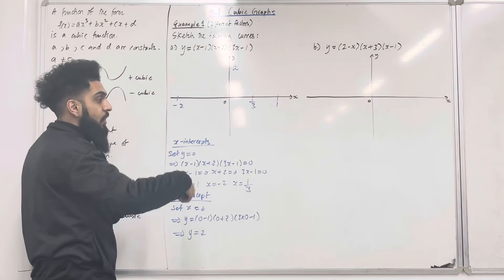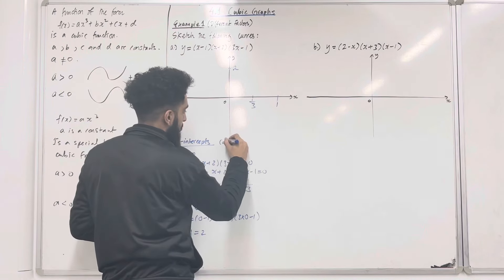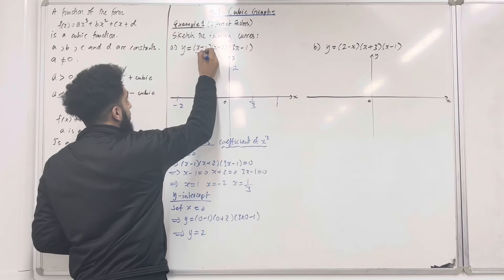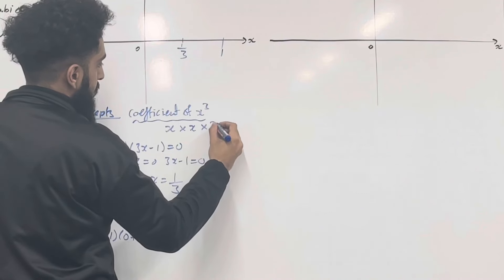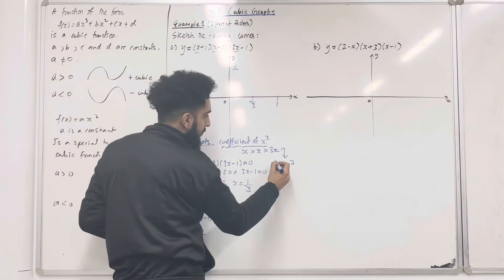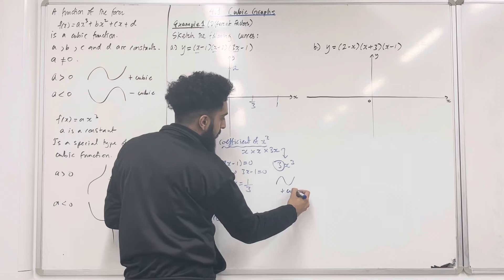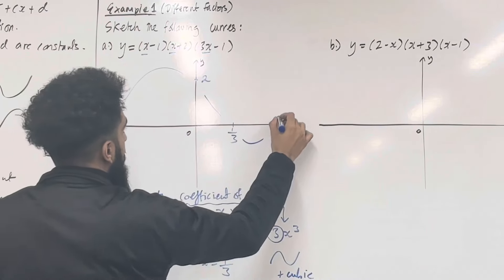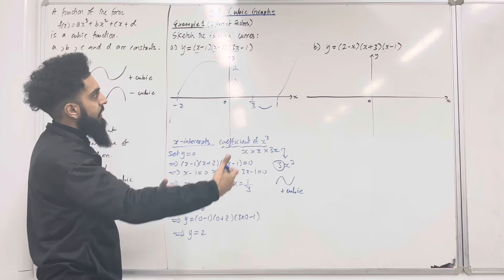So let's find the coefficient of x cubed. We have x multiplied by x multiplied by 3x, which gives us 3x cubed. So the coefficient of x cubed is 3, which is positive. So the shape of the curve will be a positive cubic. Now I can sketch my curve, passing through x equal negative 2, x equal one third, x equal 1, and y-intercept 2. That there represents y equal (x minus 1)(x plus 2)(3x minus 1).